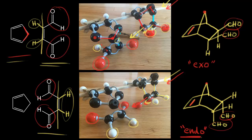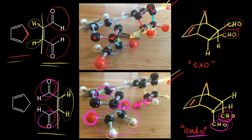The endo product is the preferred product most of the time. This is called the endo rule, or the Alder endo rule. It's thought to be due to an interaction between the developing pi bond — which occurs between these two carbons — and the carbonyl groups of the aldehyde. There's an interaction between the developing pi bond and those carbonyls which stabilizes the dienophile approaching in this way, giving us our aldehydes down and our endo product. With the exo product, these aldehydes would be too far away from the developing pi bonds — there's no interaction, so the exo product is not preferred.